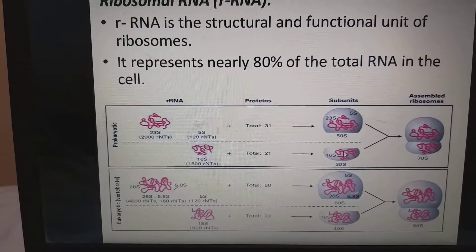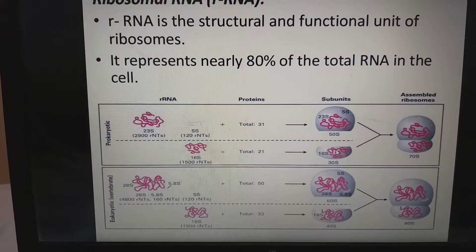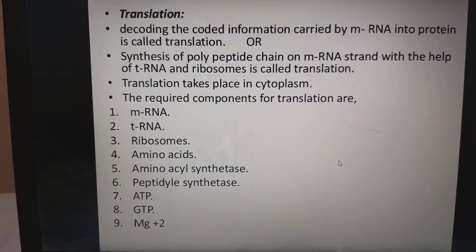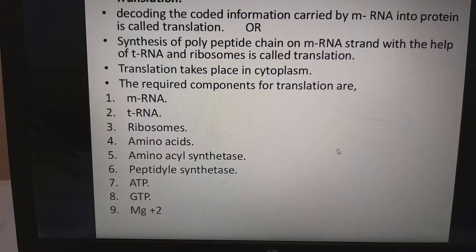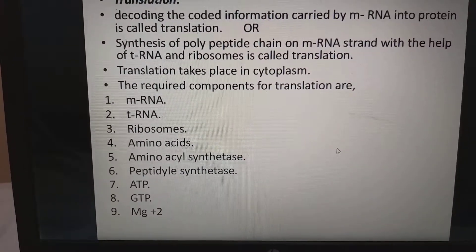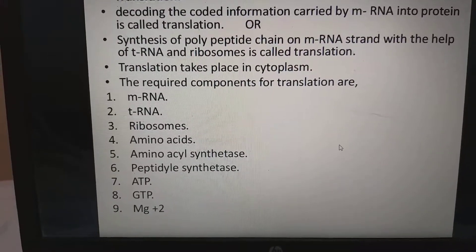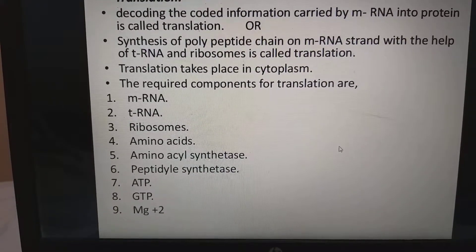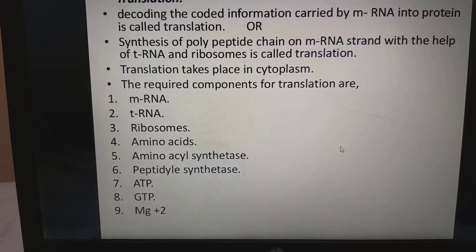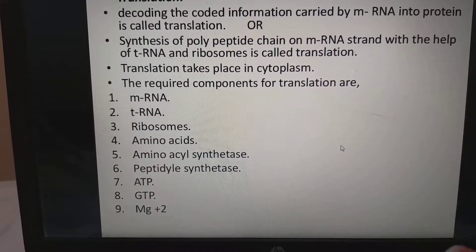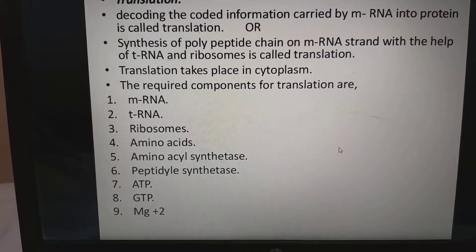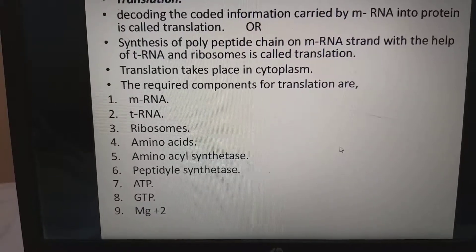Ribosomal RNA (rRNA) is the structural and functional unit of ribosomes. It represents nearly 80% of total RNA in the cells. Coming to translation: decoding of the coded information carried by mRNA into protein is called translation. It is converting one form into another form — transcription keeps the same code converting DNA to RNA, but translation converts the RNA code into protein form.